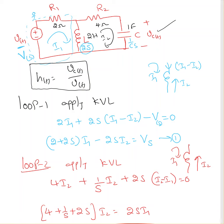So, 2 times I1 plus 2s times I1 minus I2. I1 minus I2 is the current passing through that inductor. The vertical inductor, I1 is coming down, I2 is going up. You can say I1 minus I2 is coming down or I2 minus I1 is going up.